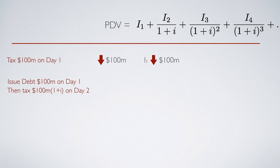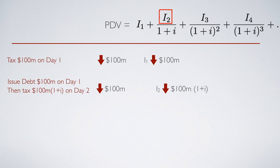However, whenever government issues debt, government has to pay back later through taxation someday. So if we assume government financed today's purchase through issuing debt and then government decides to pay back the debt on day 2, then on day 2, government has to tax not only $100 million but $100 million times (1 + i). Therefore on day 2, I2 would decrease by $100 million × (1 + i). Its impact on the present discounted value — which divides further by (1 + i) — means that the present discounted value would decrease by $100 million, which is the same as the first financing method that taxes the household immediately on day 1. So these two finance methods actually give the same impact on household present discounted value.